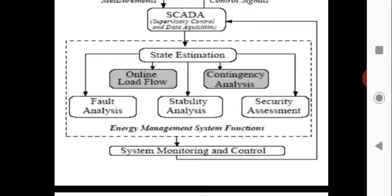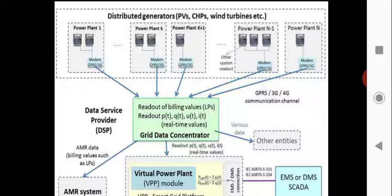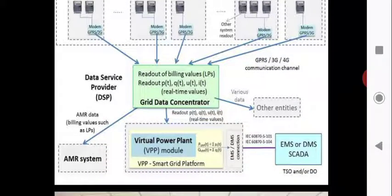We need to perform the SCADA function. The power plant distribution includes power plant 1, power plant K, and power plant K+1. Each power plant communicates through GPS, GPRS, or communication channels such as 3G or 4G. The readout values — including power P — are sent from the power plant to a virtual power plant. This involves smart devices, automatic meter reading, and building systems.